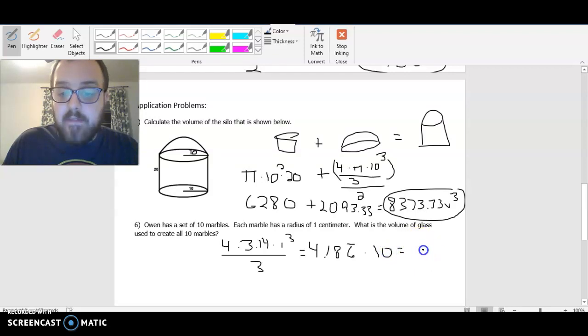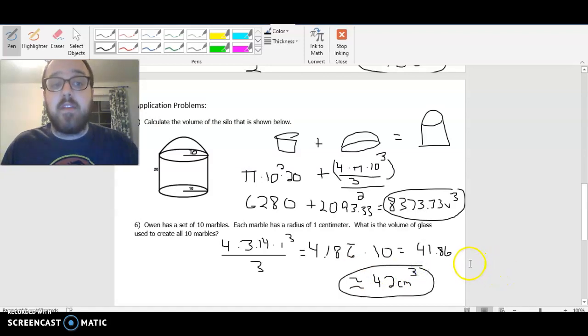And when I do that, I'm going to get 41.86, which let's go ahead and let's round that to about 42 centimeters cubed. Okay, so I need about 42 cubic centimeters in order to have enough material for these marbles.